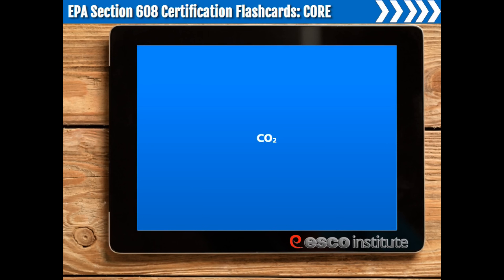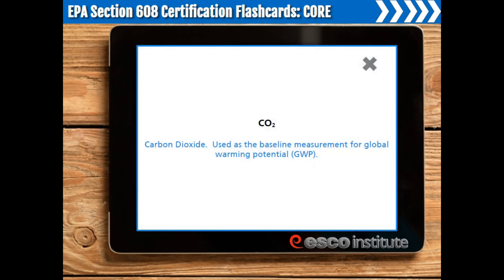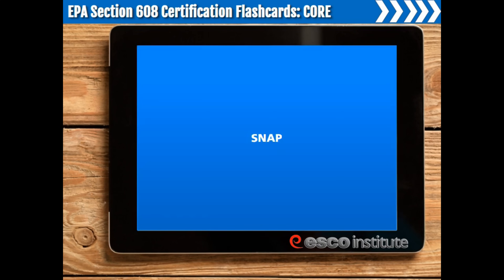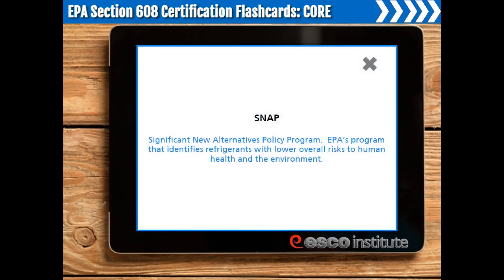CO2 — carbon dioxide — is used as the baseline measurement for global warming potential, or GWP. SNAP. SNAP stands for the Significant New Alternatives Policy Program. This is EPA's program that identifies refrigerants with lower overall risks to human health and the environment.